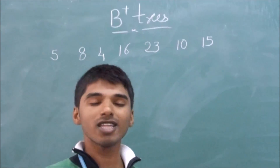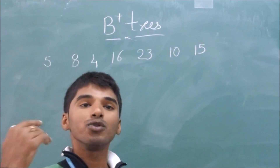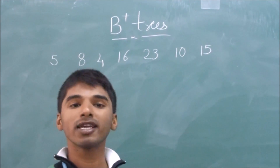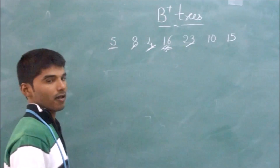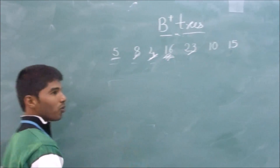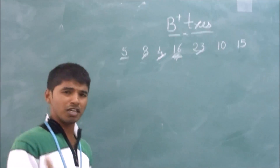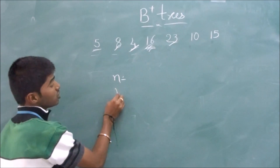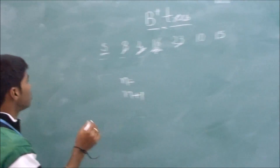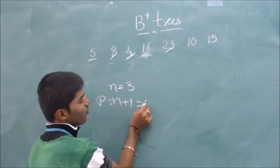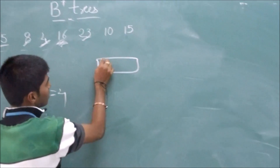The B+ Tree indexing structure is a balanced tree in which the height from root to leaf nodes is the same for every node. We will start our discussion by constructing the B+ Tree. In a node, we can contain any number of search keys, and if we have N search keys, the node contains N+1 pointers. We will take N equal to 3, so the pointers will become 4. Now we will construct this B+ Tree.